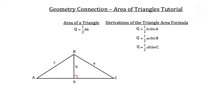One way to think of the height for this triangle is to think of drawing a line straight up from either angle A or angle C, and then when you reach the height of point B, draw your line directly over until it matches the top point, point B.